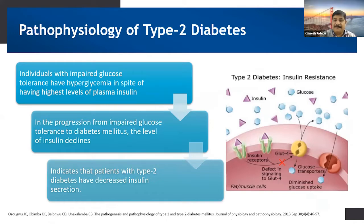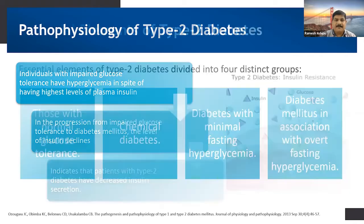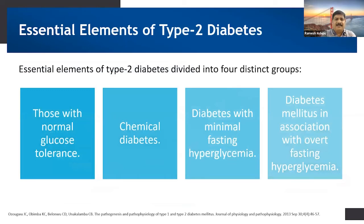Coming to the pathophysiology of Type 2 diabetes mellitus: individuals with impaired glucose tolerance have hyperglycemia in spite of having the highest levels of plasma insulin. This leads to progression from impaired glucose tolerance to diabetes mellitus as the level of insulin slowly starts to decline. Based on glucose tolerance tests, patients with Type 2 diabetes are divided into four distinct groups: those with normal glucose tolerance and chemical diabetes, diabetes with minimal fasting hyperglycemia, and diabetes mellitus in association with overt fasting hyperglycemia.